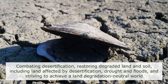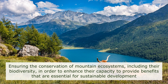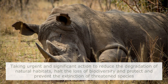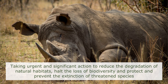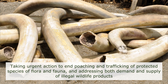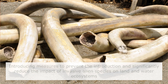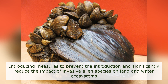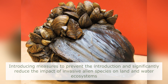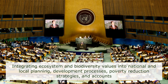Further targets include combating desertification, restoring degraded land and soil — including land affected by desertification, drought, and floods — and striving to achieve a land-degradation-neutral world. Also: ensuring the conservation of mountain ecosystems including their biodiversity, taking urgent action to reduce habitat degradation and halt biodiversity loss, preventing extinction of threatened species, ending poaching and trafficking of protected flora and fauna, addressing both demand and supply of illegal wildlife products, reducing the impact of invasive alien species on land and water ecosystems, and integrating ecosystem and biodiversity values into national and local planning, development processes, poverty reduction strategies, and accounts.